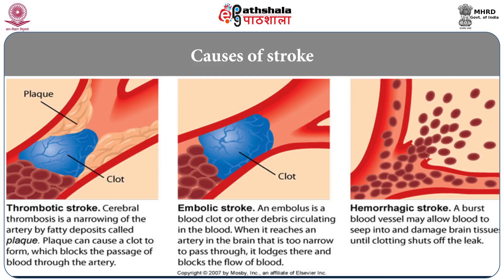The third major cause for stroke aphasia is hemorrhage. Thrombosis, embolism, and hemorrhage are the three main causes. Hemorrhage, as the rightmost picture shows, is a burst blood vessel. If for various reasons internal hemorrhage takes place, the burst blood vessel leaks blood out, so sufficient blood does not reach the region subserving a specific language function, and then you have a stroke.